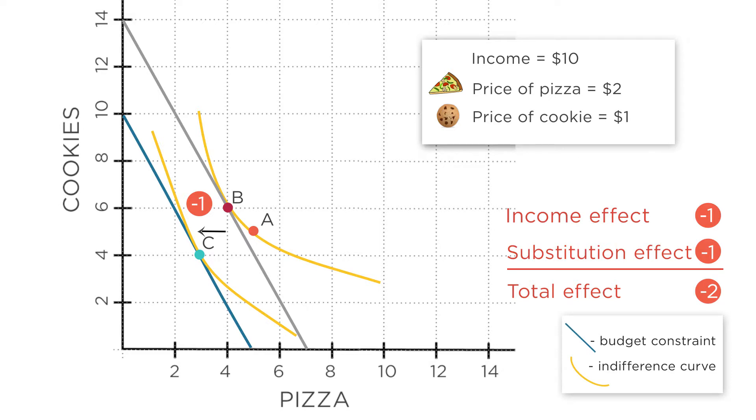In this example, the income and substitution effects went in the same direction. The pizza was pricier, so you substituted away from it. But the price change also made you feel poorer, and that also caused you to buy less pizza. That means pizza's a normal good on this graph.